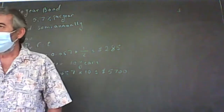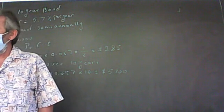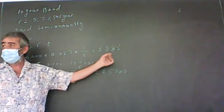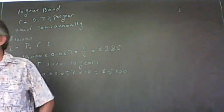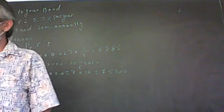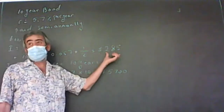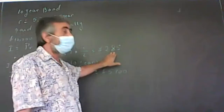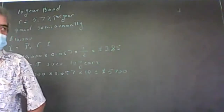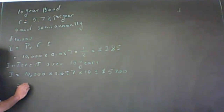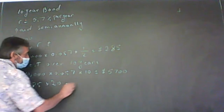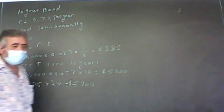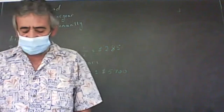Another approach: we already know he gets $285 every six months. In 10 years, there are 20 six-month periods. So he's going to get that amount 20 times — that's 285 times 20, which still gives $5,700. Either way you solve it, you get the same answer.